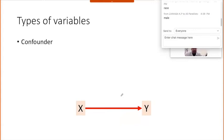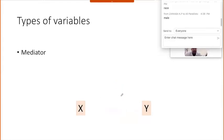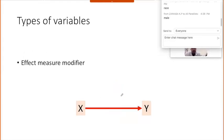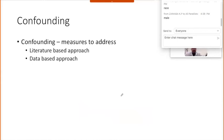To recap: we covered three terms — confounder, mediator, and effect measure modifier. Most research focuses on addressing confounding — a hidden variable we have not recognized that changes the association between X and Y. There are two approaches to handle confounding: a literature-based approach and a data-based approach.